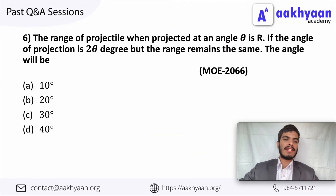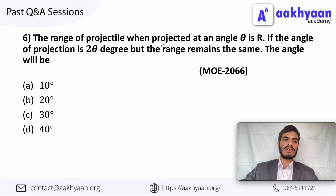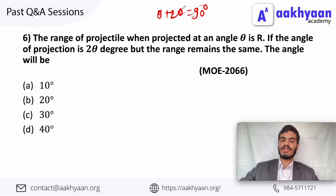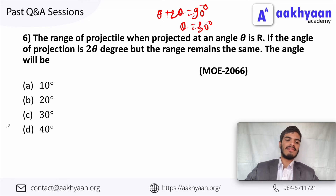In the next problem, the range of the projectile projected at angle theta is R. If the angle of projection is 2theta but the range still remains the same, the condition is the two angles must sum to 90 degrees. So theta plus 2theta equals 90 degrees, giving theta equals 30 degrees. This is the correct answer.